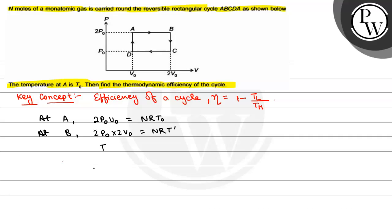So here we have T' equals 2T₀. Therefore, T_higher is coming as 2T₀ and T_lower is T₀.